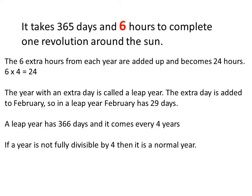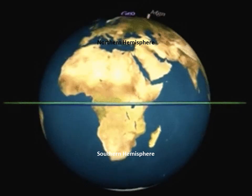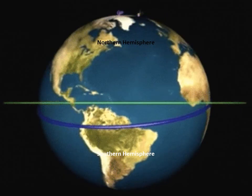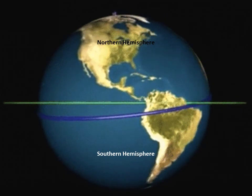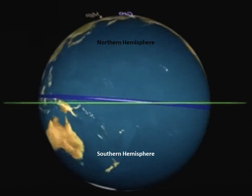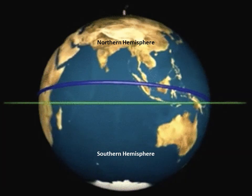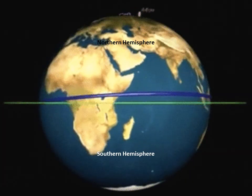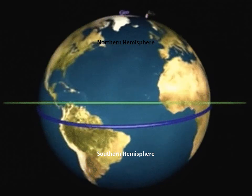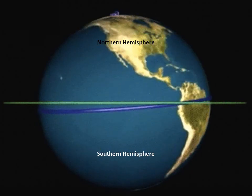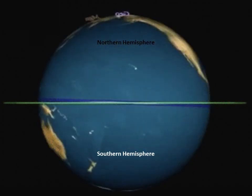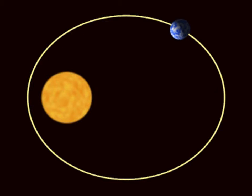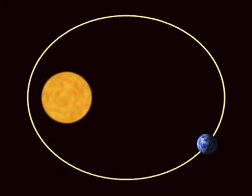Now let us learn about seasons. The change in seasons from summer to winter and back from winter to summer happens because of two main reasons. The first reason is the tilt of the earth's axis and the second reason is the orbit of the earth around the sun. Let me explain this with a small example.